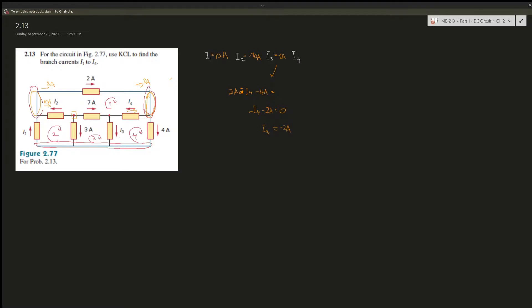Since i4 is negative 2A, it's actually entering with 2A. Now using the remaining node: 7A is entering, i3 is leaving, and i4 (negative 2A) is leaving. So: negative i3 plus 7A minus 2A equals 0, which gives i3 equals 5A in the direction it's pointed.